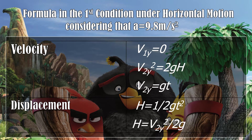Here are the formulas for the first condition under horizontal motion, considering acceleration due to gravity equal to 9.8 meters per second squared. For velocity: initial vertical velocity equals 0; final vertical velocity squared equals 2 times gravity times height; final vertical velocity equals gravity times time. For displacement: height equals one-half times gravity times t squared, and also height equals final vertical velocity squared over 2 times gravity.